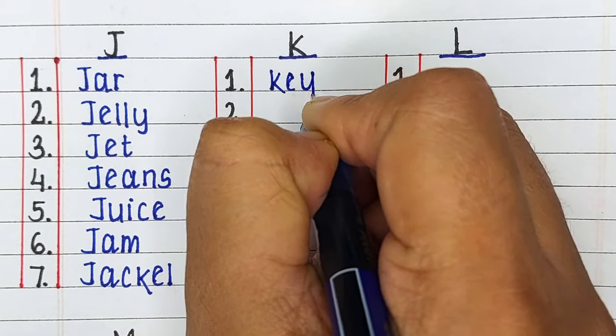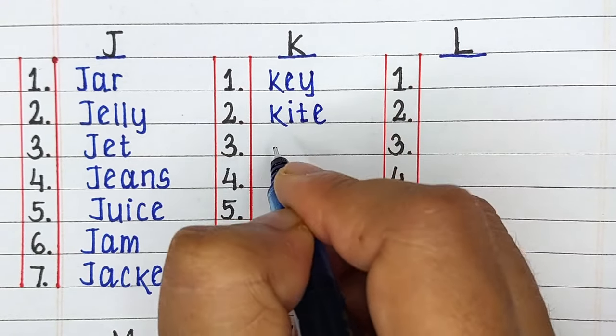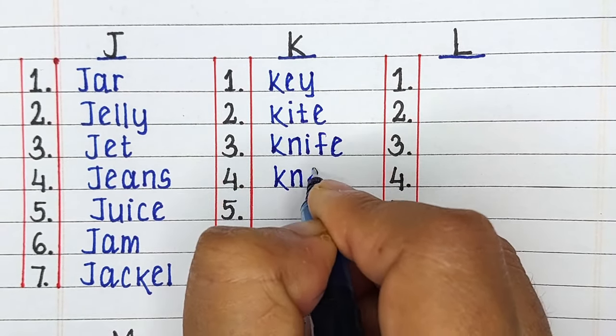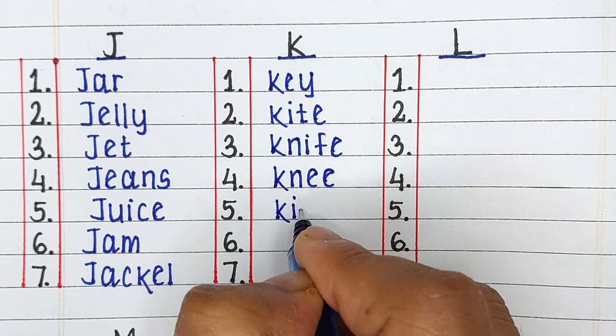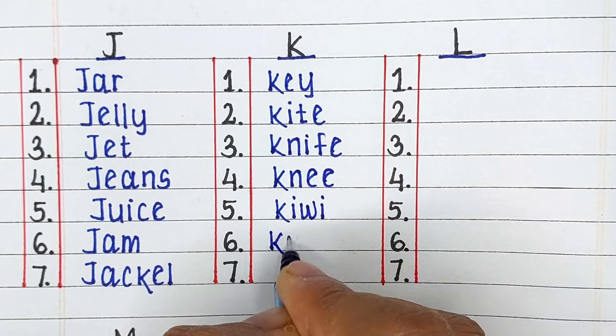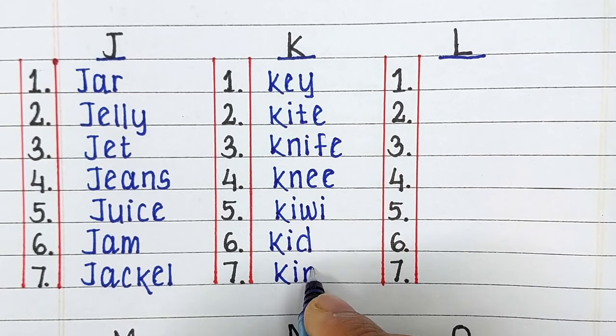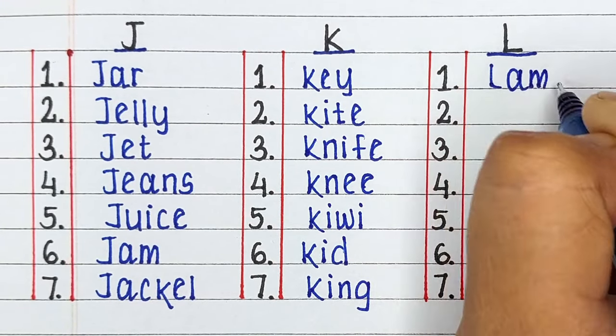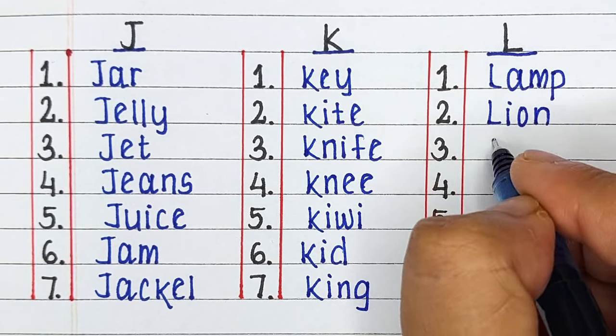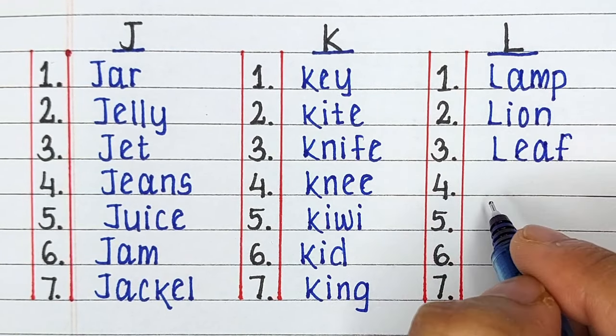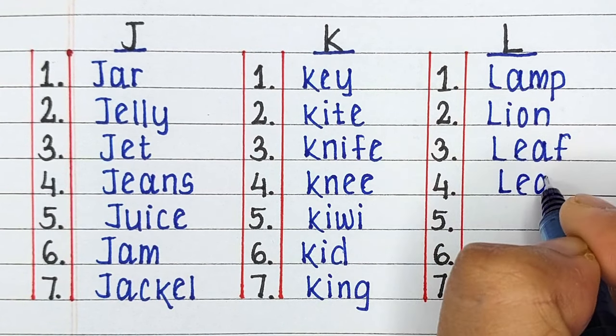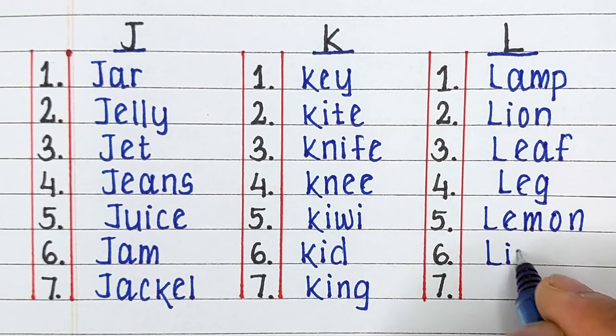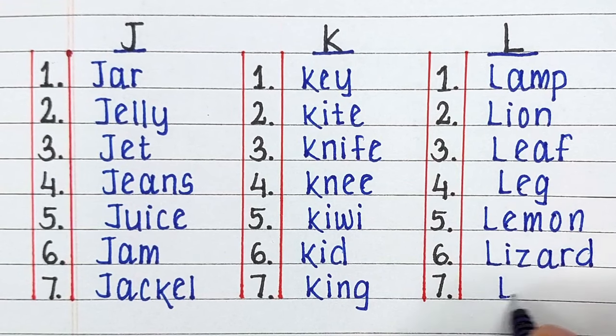Next is Alphabet K. The words starting from letter K are Key, Kite, Knife, Knee, Kiwi, Kid and King. Next up we have letter L. The words starting from letter L are Lamb, Lion, Leaf, Leg, Lemon, Lizard and Log.